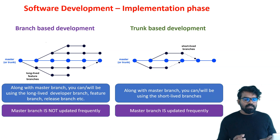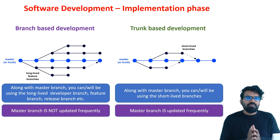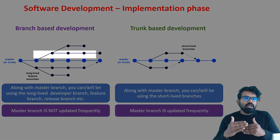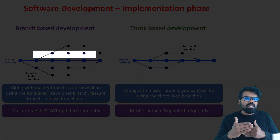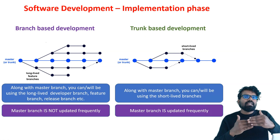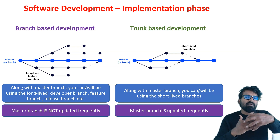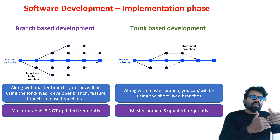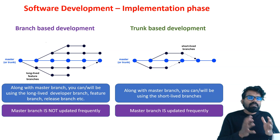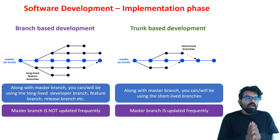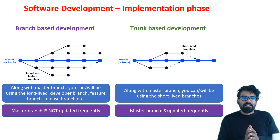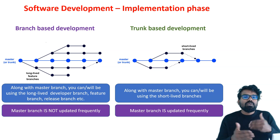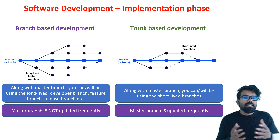The next main difference is that the master branch is not updated frequently in branch based development. You copy your source code from master into the development branch and do all your changes there, meaning the developer branch gets updated frequently. Only when everything is done do you merge into master. But in trunk based development, the master branch gets updated frequently, meaning you can frequently do deployments.